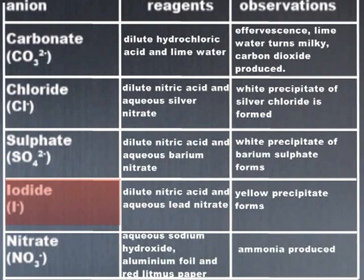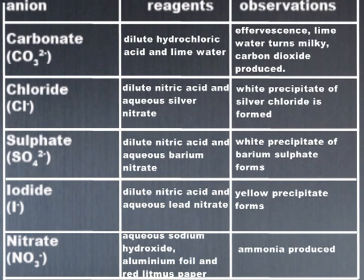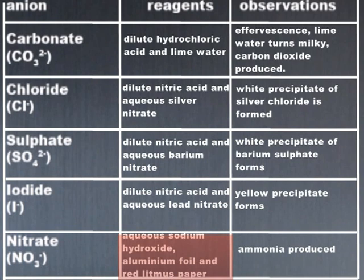The test for the iodide N-ion: a yellow precipitate was produced when dilute nitric acid and aqueous lead nitrate were added to the solution. The test for the nitrate N-ion: ammonia was produced when aqueous sodium hydroxide and aluminium foil were added to the solution and then it was carefully heated.